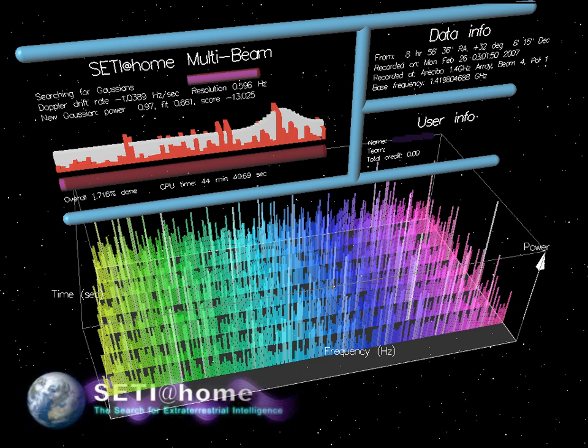This region of the radio spectrum is dubbed the Water Hole due to its proximity to the hydrogen and hydroxyl radical spectral lines. A 400 kHz band around the marker frequency was scanned, using a single-channel receiver with a bandwidth of 100 Hz. He found nothing of interest.